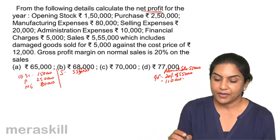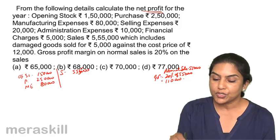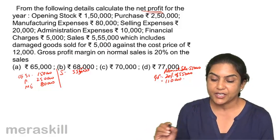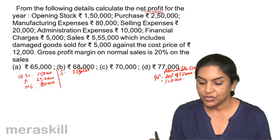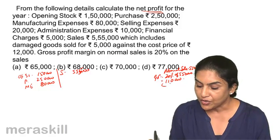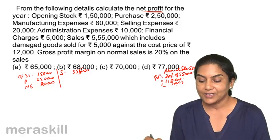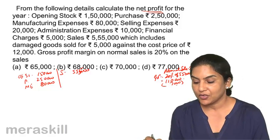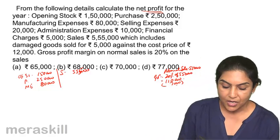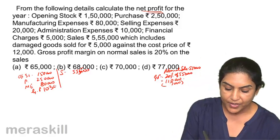But in addition to this gross profit, goods were sold for 5,000 and the cost price was 12,000. Therefore there is a loss of 7,000. Your gross profit should be 1,10,000 minus 7,000. So how much is that? 1,03,000. Your gross profit is 1,03,000.